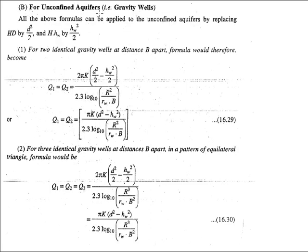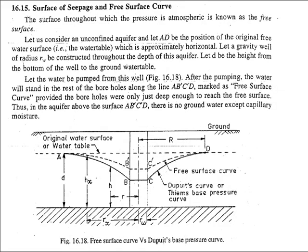He has also given formulas for gravity wells or unconfined aquifers. For two identical gravity wells at a distance b apart, we replace hd by d²/2 and h·hw by hw²/2 to obtain the formula. Similarly, for three identical gravity wells at distance b apart arranged in an equilateral triangle pattern, we use the corresponding formula to calculate the discharge of the individual well in an unconfined aquifer.